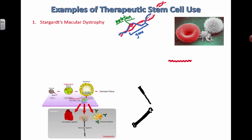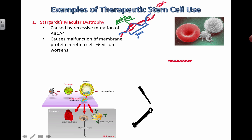The first disease is Stargardt's macular dystrophy, which is a fancy name for a particular genetic mutation that leads to non-functioning retinal cells. It's a recessive mutation — an inherited disease as opposed to one caused by a pathogen. It causes malfunction of a membrane protein in retinal cells, which line the back of your eyeball, and these proteins are supposed to transfer particular chemicals.